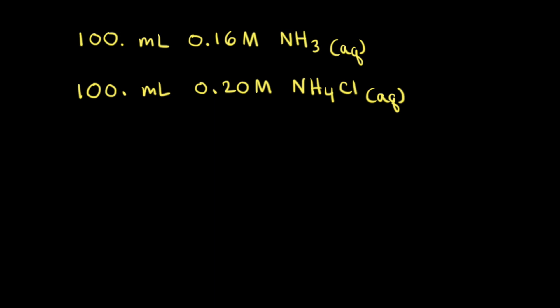Let's look at another method for making a buffer solution. In this case, we're going to mix an aqueous solution of a weak base with an aqueous solution that contains the conjugate acid to that weak base. Our weak base is ammonia, NH3, and its conjugate acid is the ammonium ion, NH4+. If we have an aqueous solution of ammonium chloride, it provides ammonium ions in solution. When the two aqueous solutions are mixed, we'll have a significant amount of both the weak base and its conjugate acid — therefore, we will have a buffer solution.